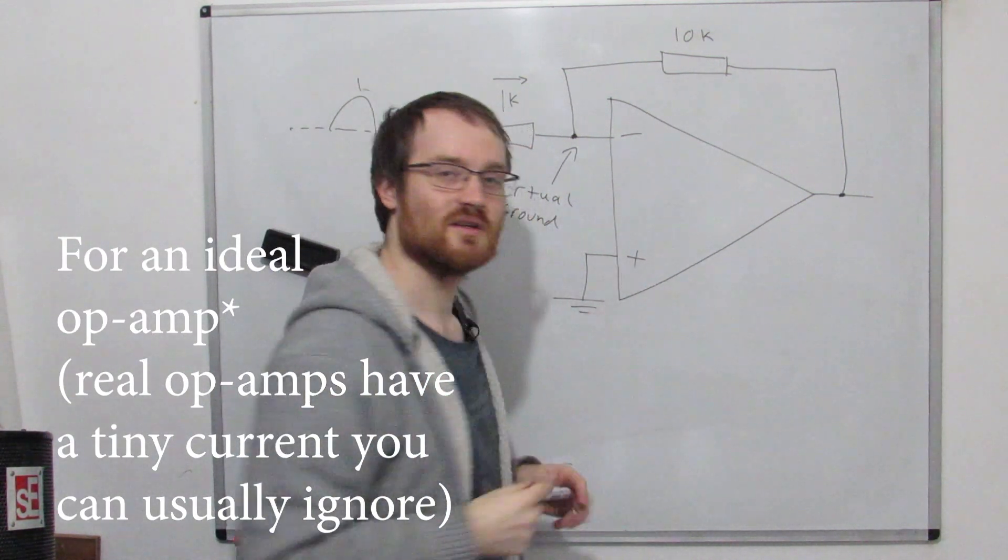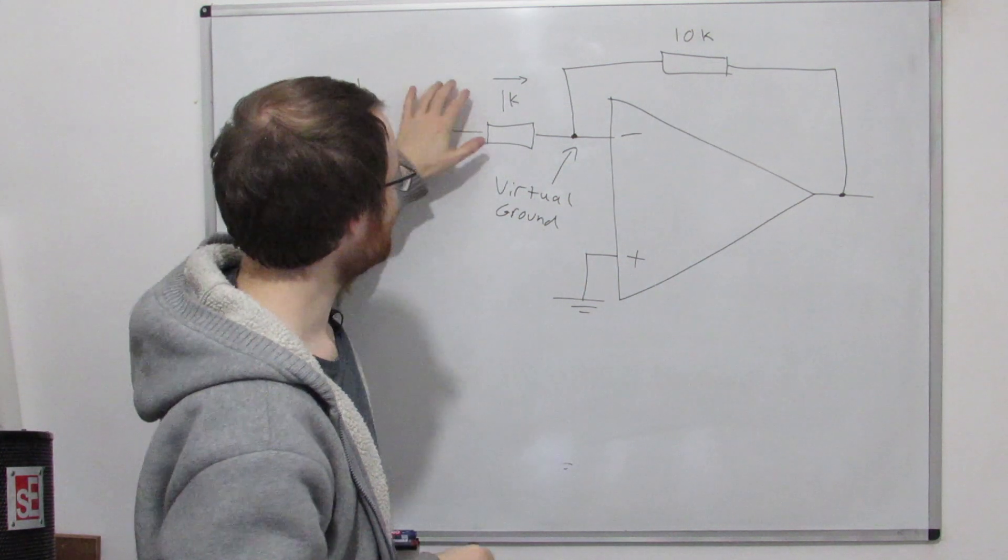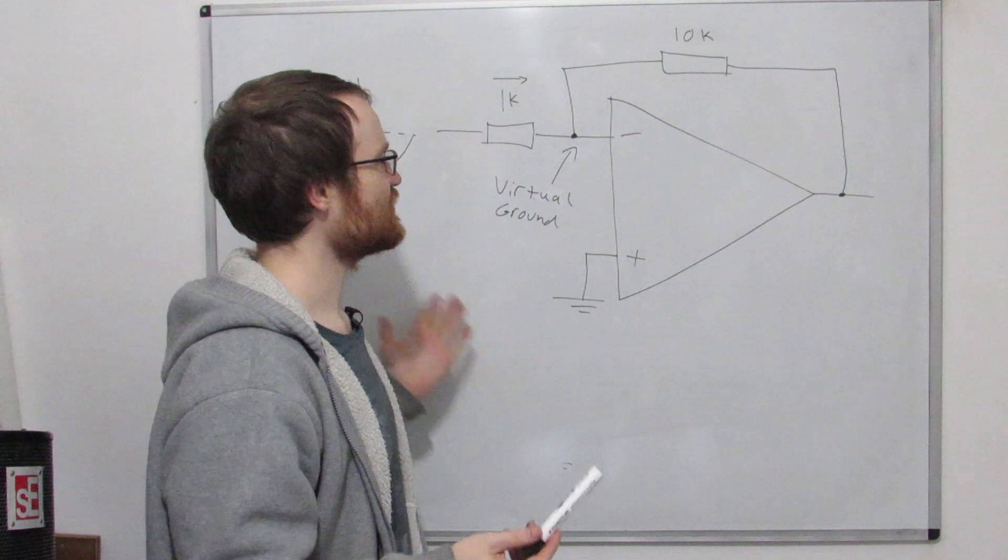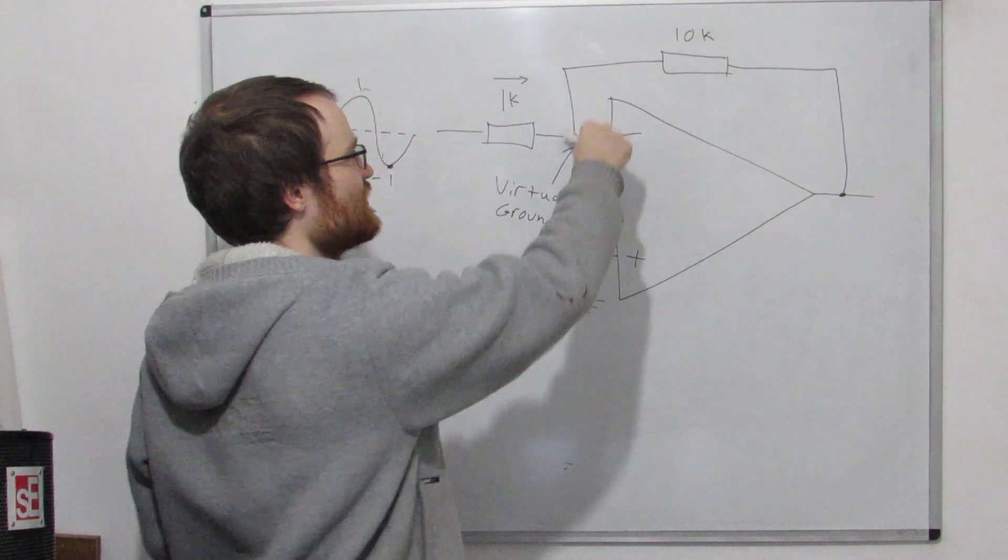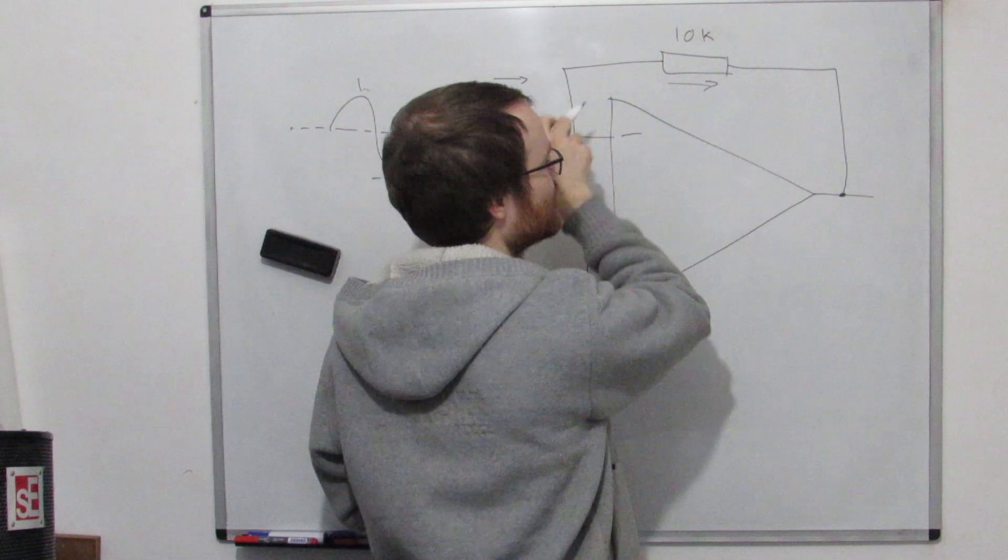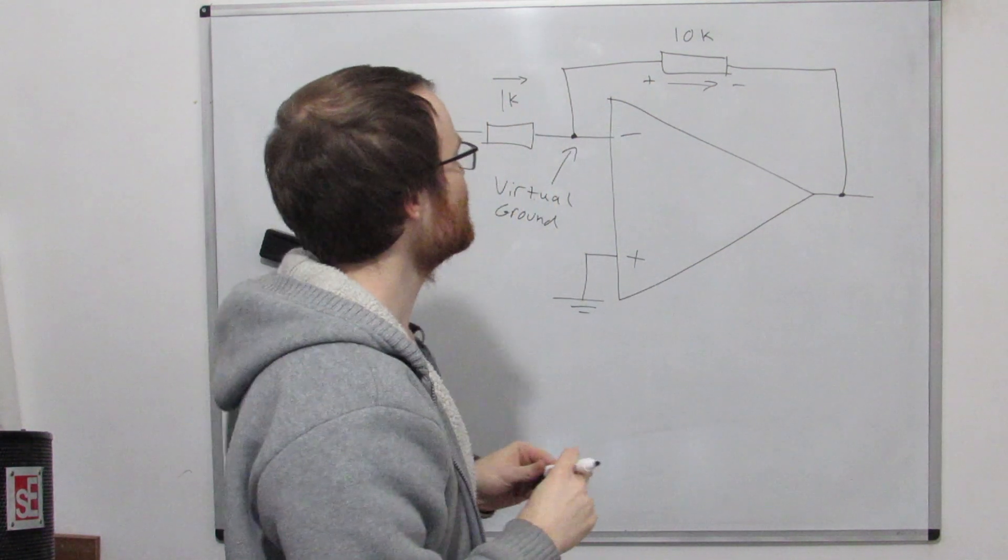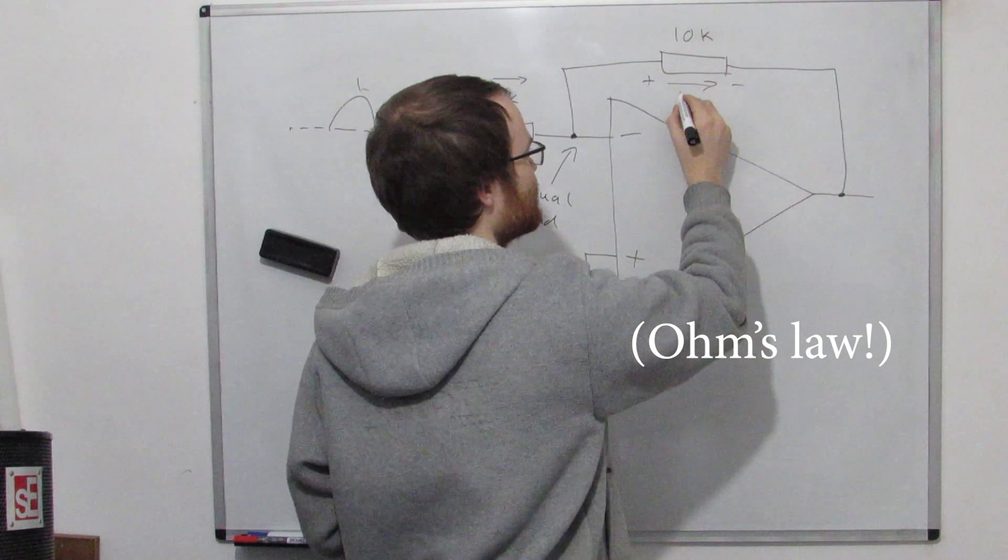So now we need our second magical rule that no current flows in or out of these terminals. So we've got this one milliamp current that flows this way, so what happens to it? Well, I've just told you that it can't go in here, so we know it has to go this way.